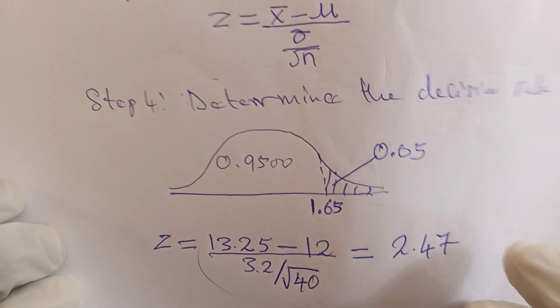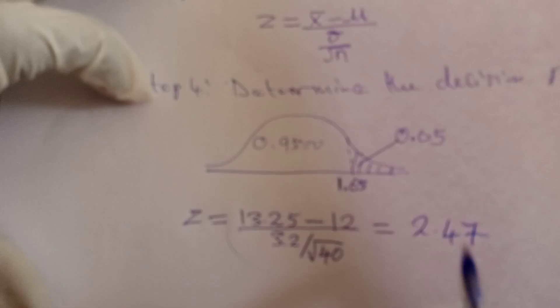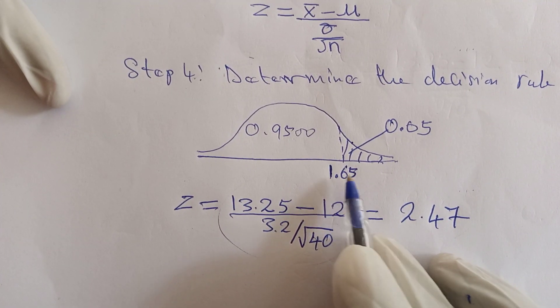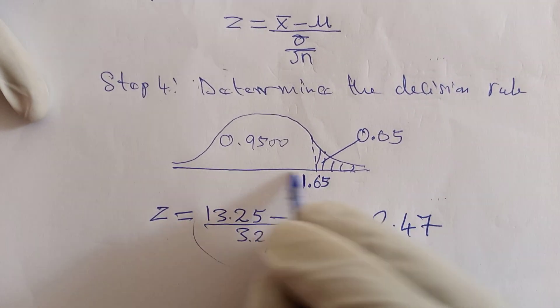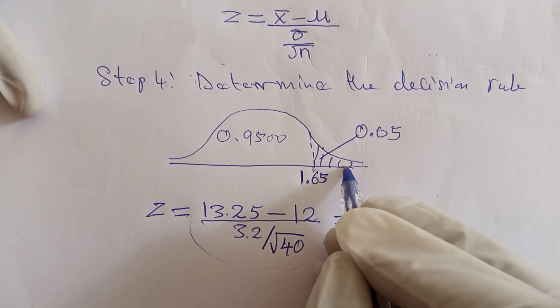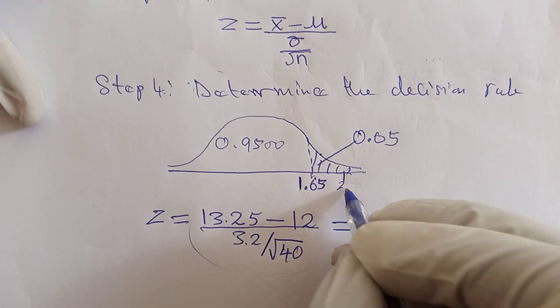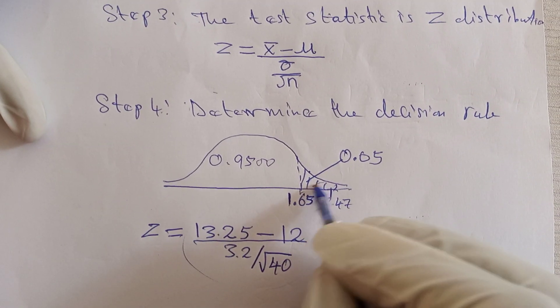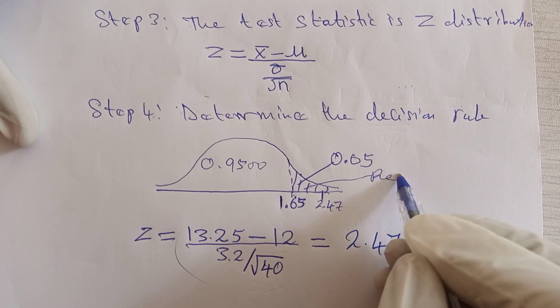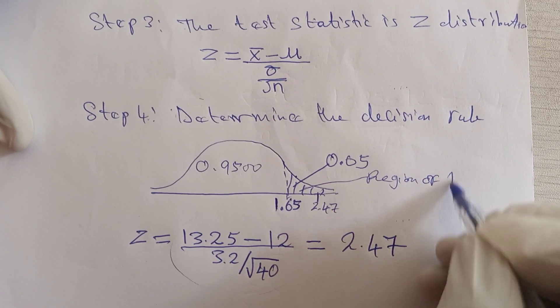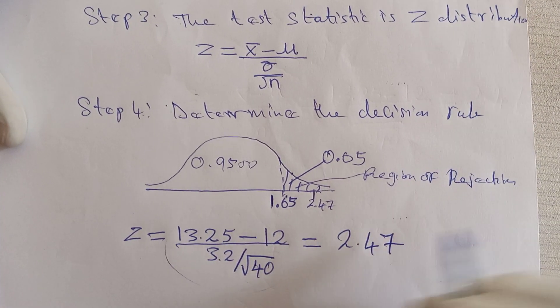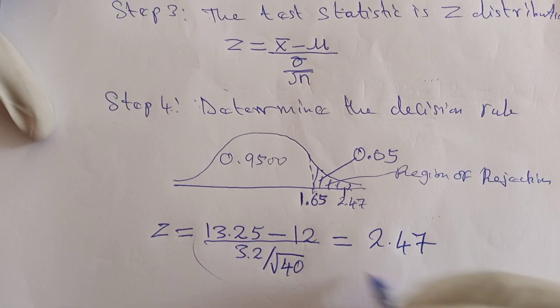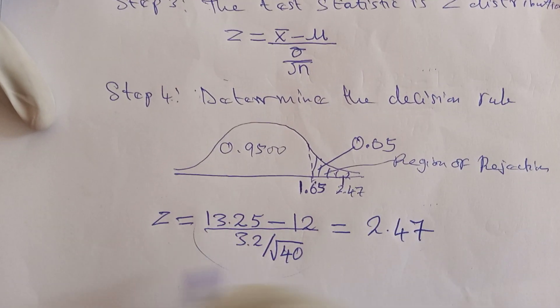Now you ask yourself: this 2.47, where does it lie? You see that it's greater than 1.65. If you plot it on the same line, it would be somewhere here at 2.47. As you can see, it falls in the region of rejection, or rejection region.